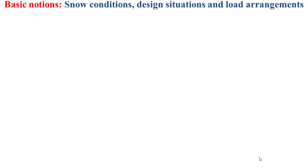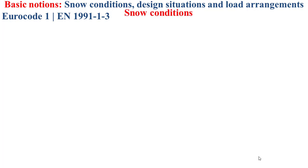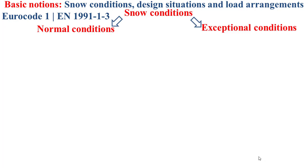First, some basic notions about snow conditions, design situations, and load arrangements should be assimilated and properly taken into consideration when determining the snow actions. Based on EuroCode 1 standards associated to European standard EN 1991-1-3, two snow conditions are distinguished: normal conditions and exceptional conditions. Normal conditions are characterized by no exceptional snowfalls and no exceptional snowdrifts.